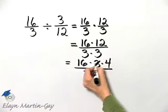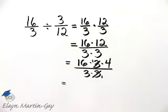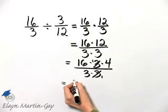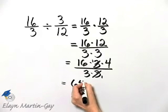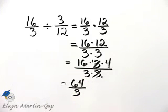So I'll divide out a common factor of 3, and then let's write down what we have. We have 16 times 4. Now, what is 16 times 4? That is 64 over 3, 3 times 1 or 3.